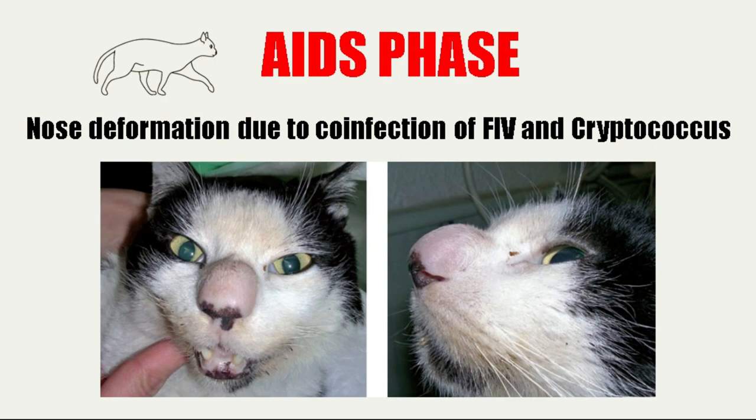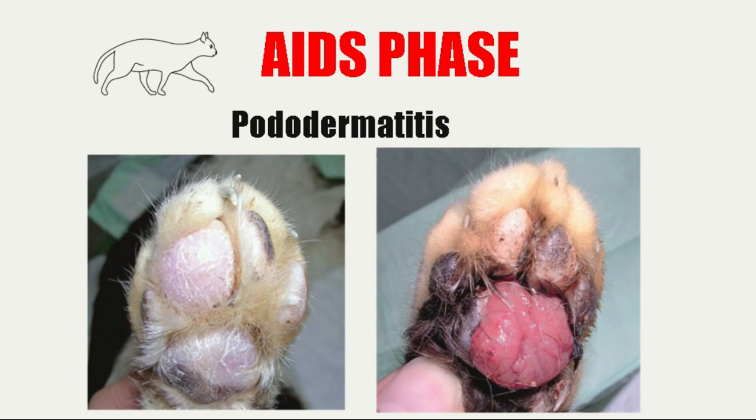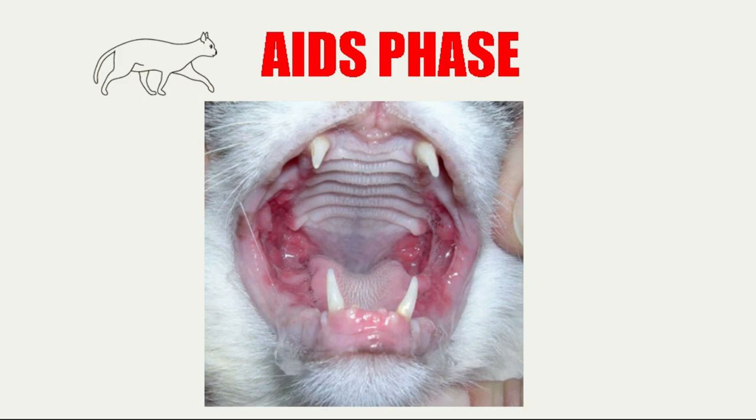Signs may also occur due to kidney damage. It is important to remember that the subclinical phase, phase 2, and phase 3, the clinical phase, can last for months and even up to years in the life of the cat.